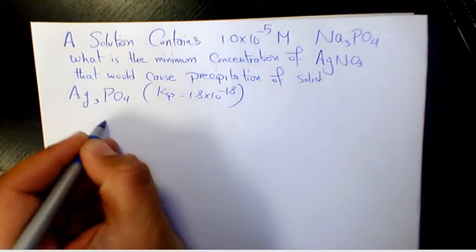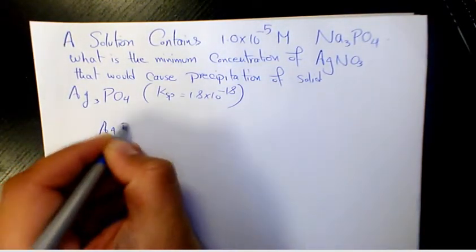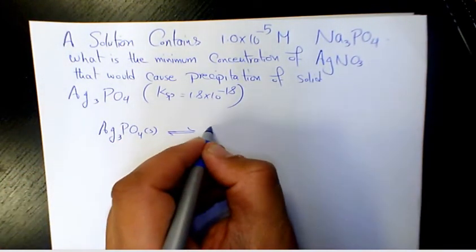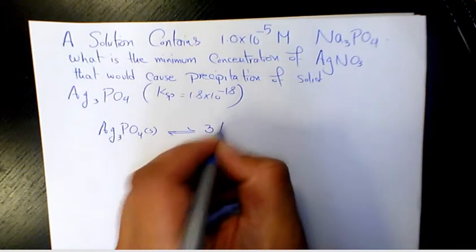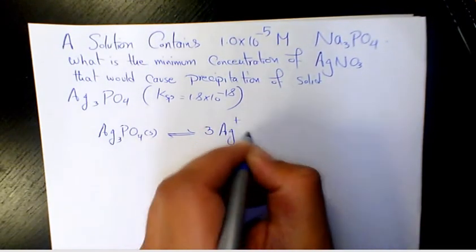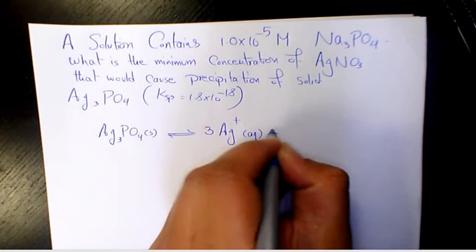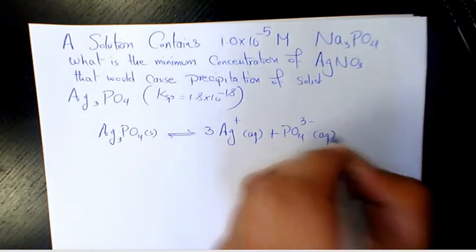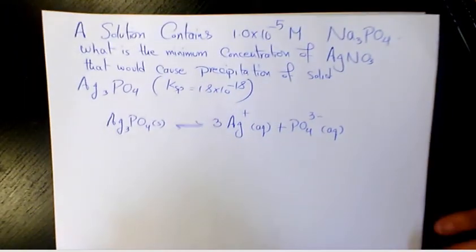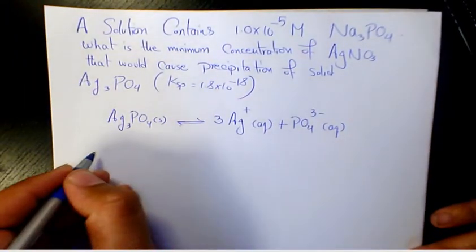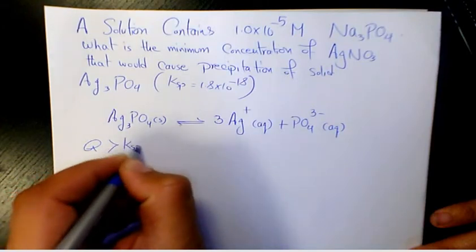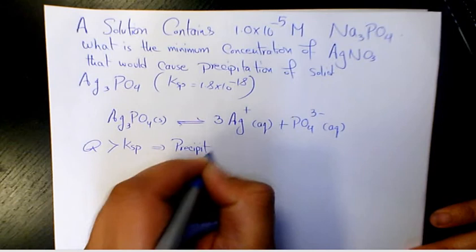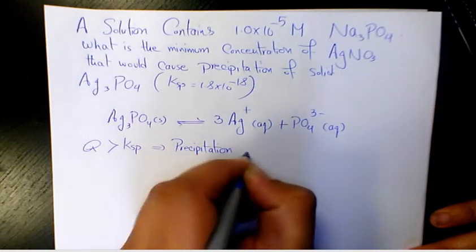First thing I want to do: Ag3PO4 in solid form is gonna produce 3 Ag+ in aqueous phase plus PO4 3- in aqueous phase. When Q is greater than Ksp, precipitation occurs.